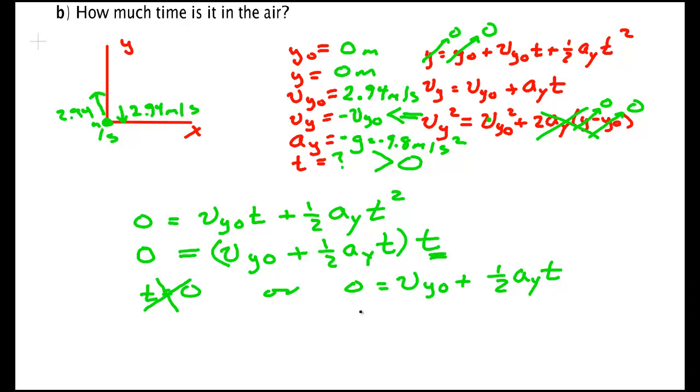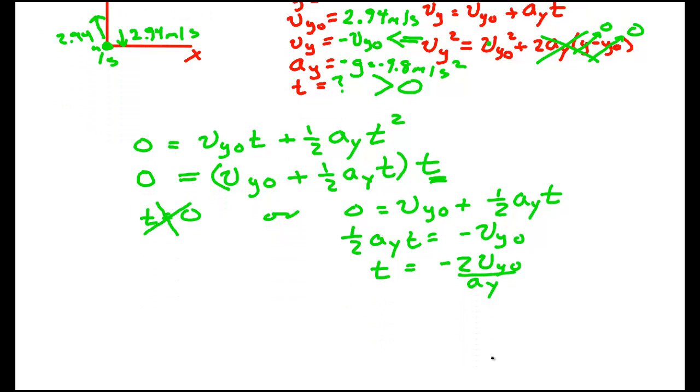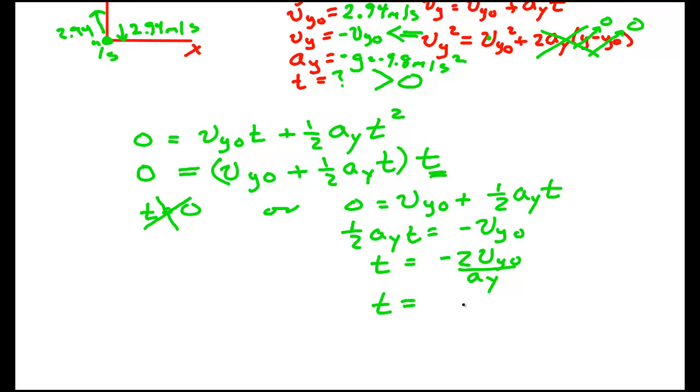This one here, we can solve for t. So, one half a y t is minus v y naught, t is minus 2 v y naught over a y. Let me roll up just a minute. t is equal to, but a y is minus g. And the minus over minus cancels and we get 2 v y naught over g. And that is the answer to our problem.